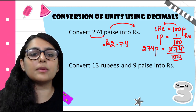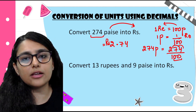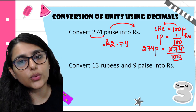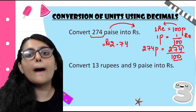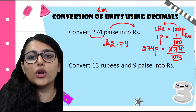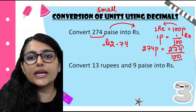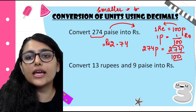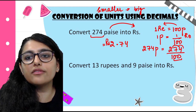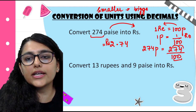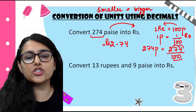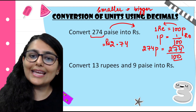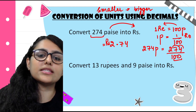In this case, decimals help me when I have to convert smaller units into bigger units. When we go from smaller to bigger, we divide by 100, 1000, or however many units are in it. Then we put the decimal.